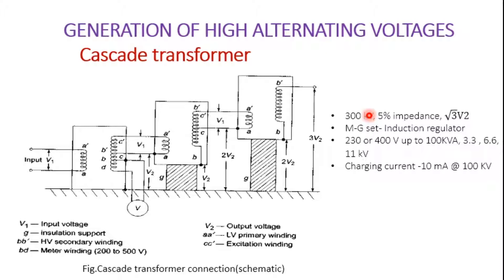In addition to the primary and secondary, the transformer will have a third winding, that is a tertiary winding, which is required for meter reading purposes — to measure what voltage is obtained across the secondary side of the transformer. For higher voltages, a single unit construction is very difficult and will lead to costly insulation and cooling is also a major problem.